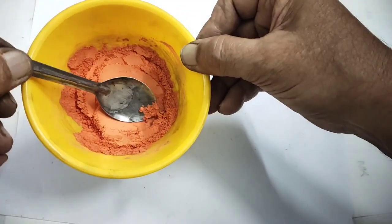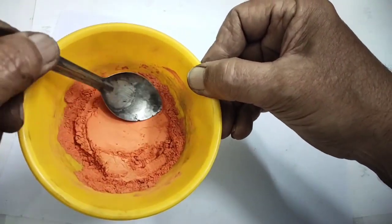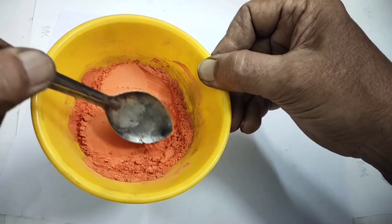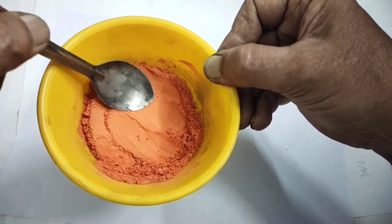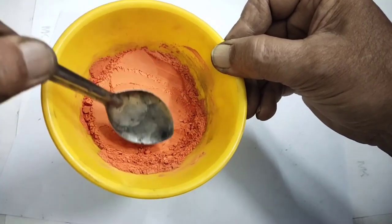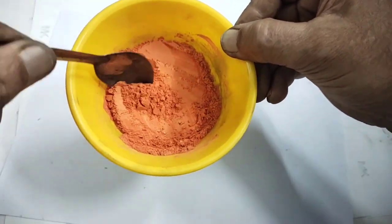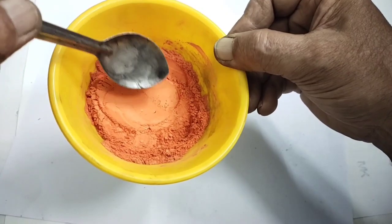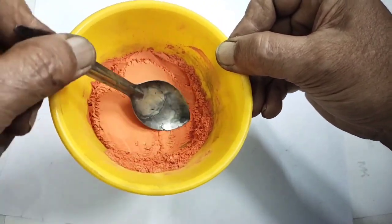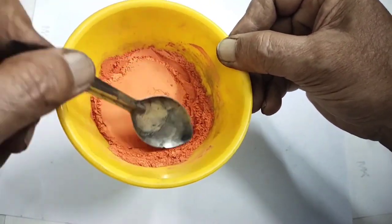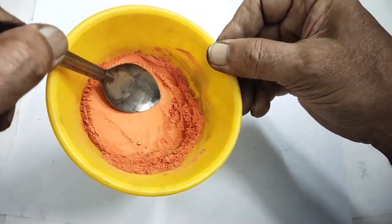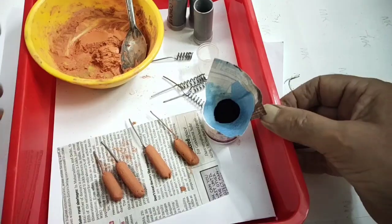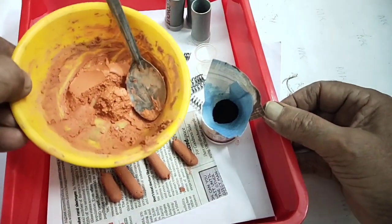I have prepared the lead oxide paste. For details you can see my previous videos, what is the proportion of lead oxide, red lead, and how much distilled water I have to add, then 10 percent sulfuric acid. We will make a very smooth paste. Then I go for filling those grids.